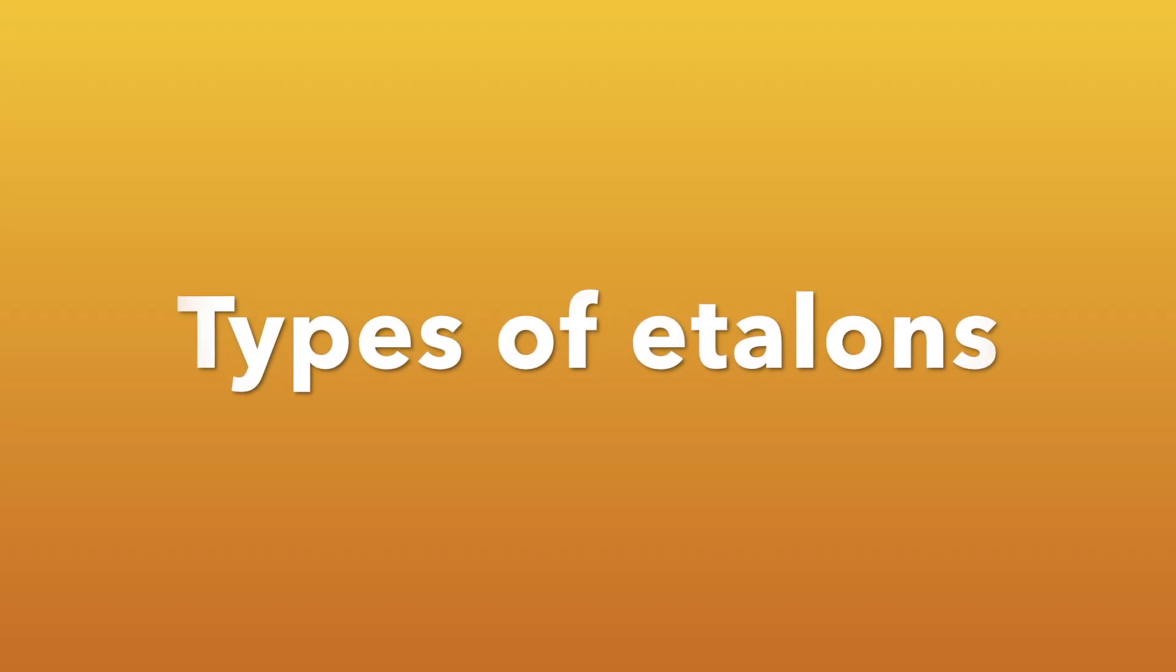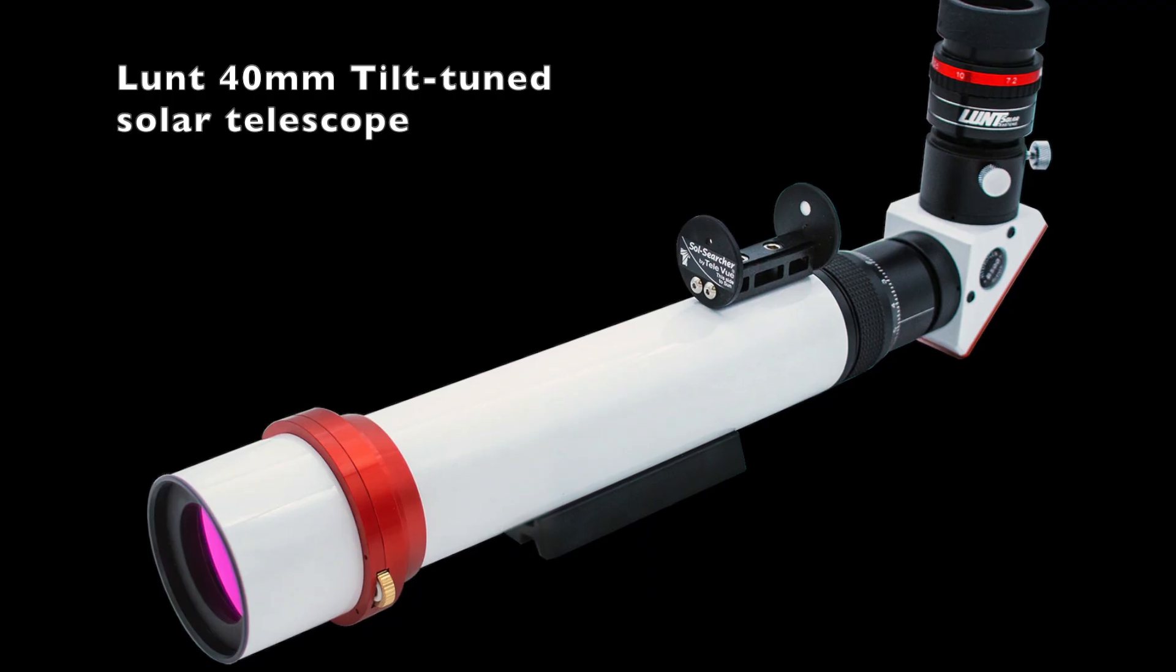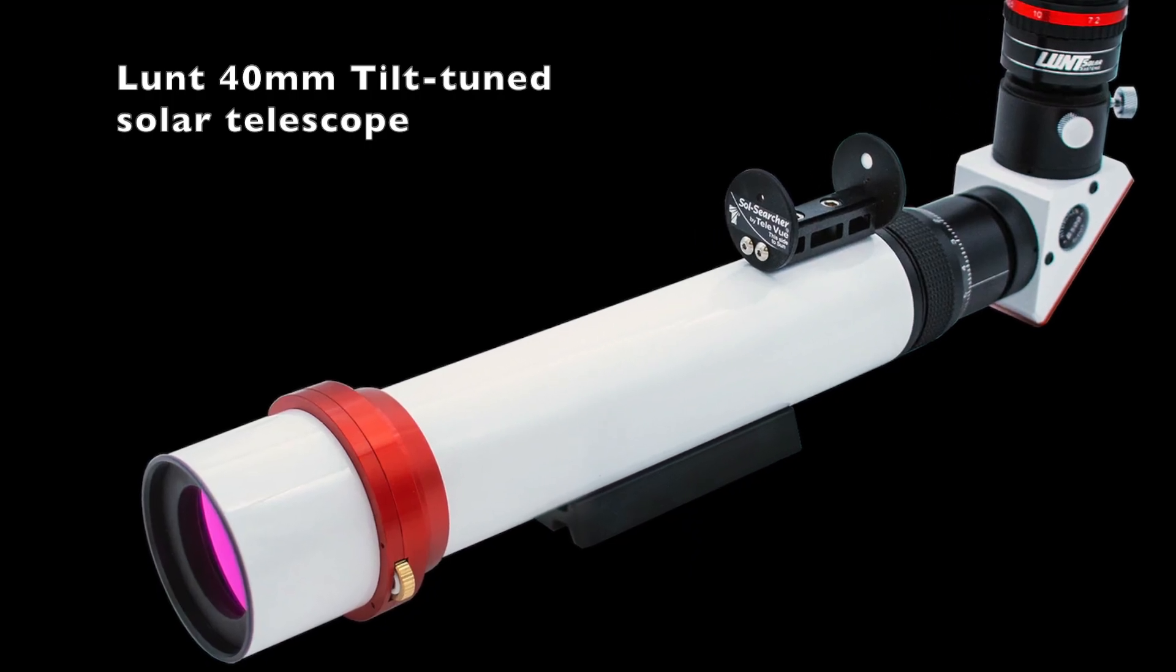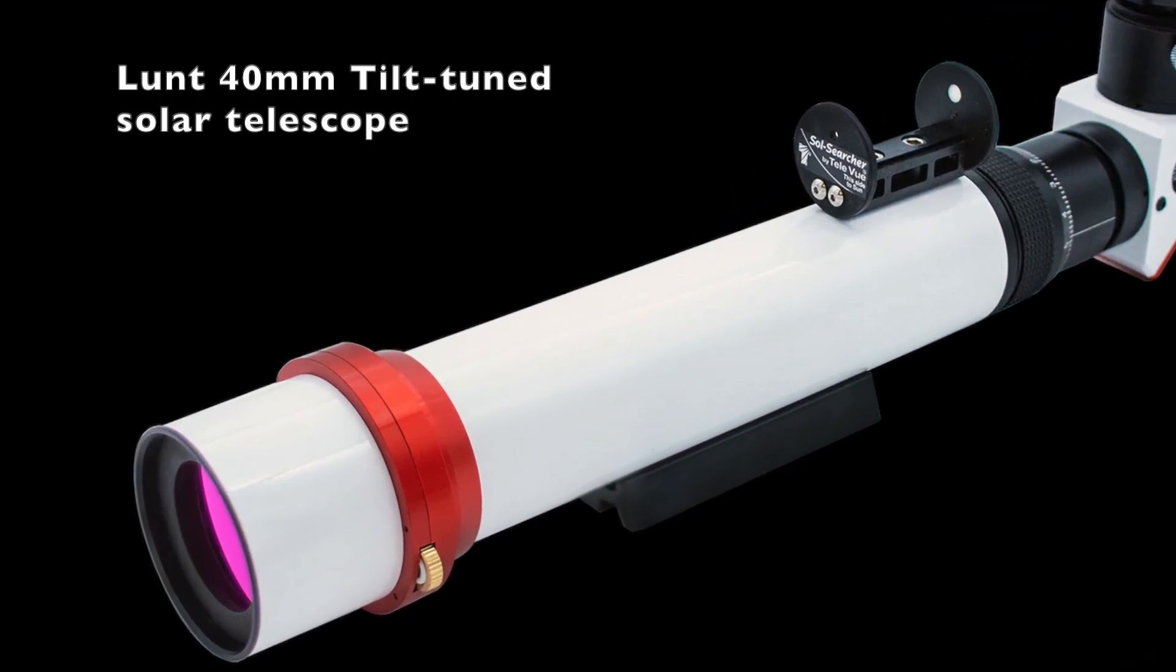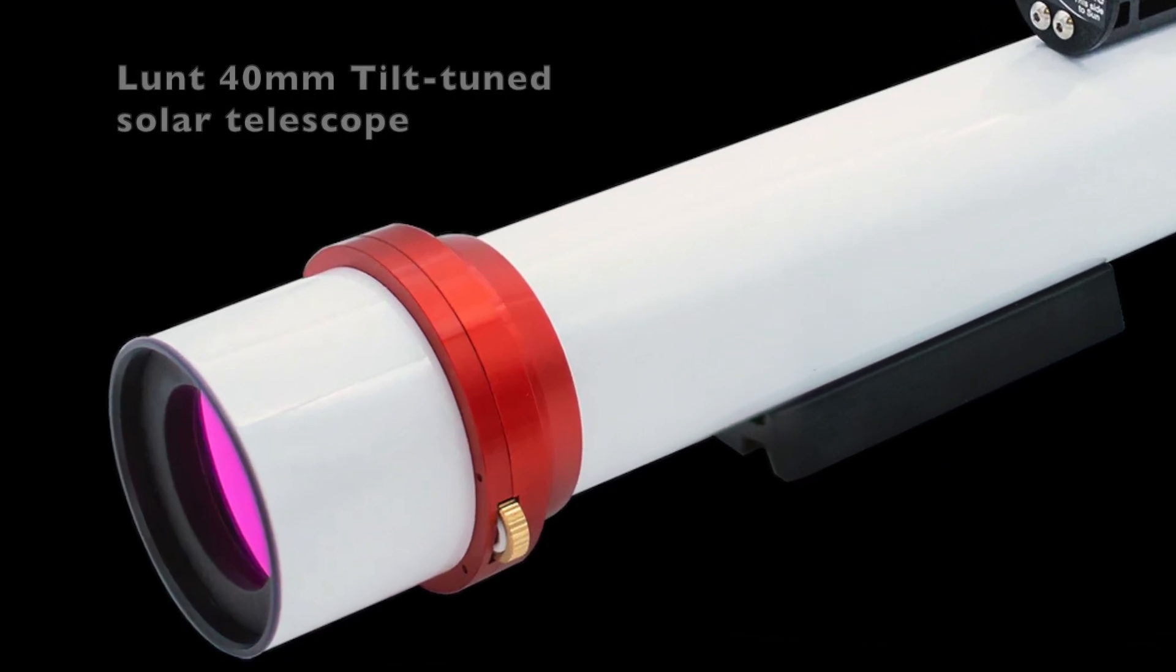There are four main etalon approaches. One, tilt-tuned etalons. These are used in Lunt and Coronado scopes. They're simple and fast to adjust, typically on the objective of the solar telescope.